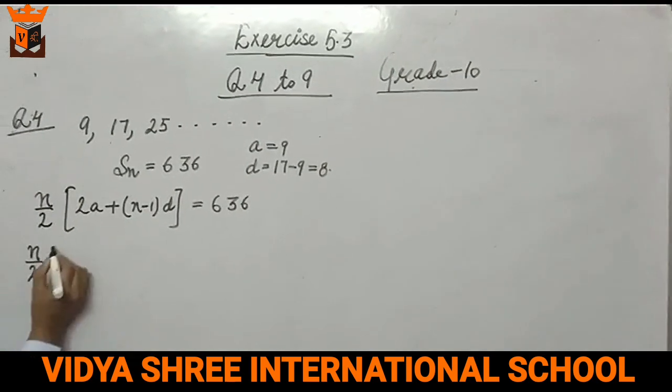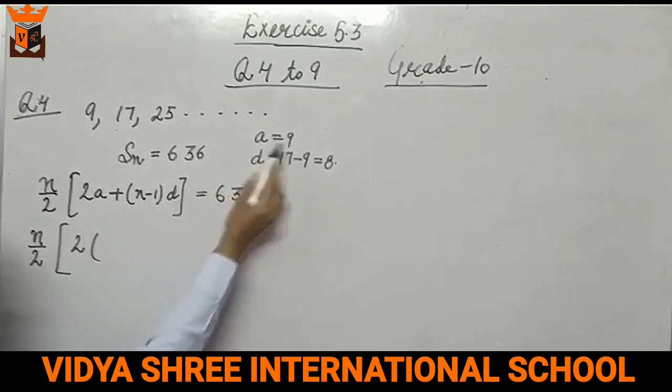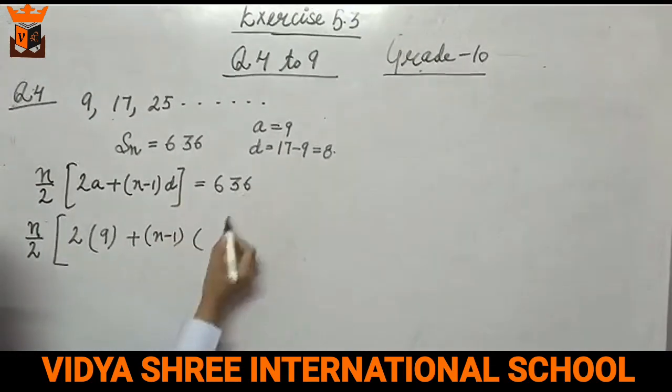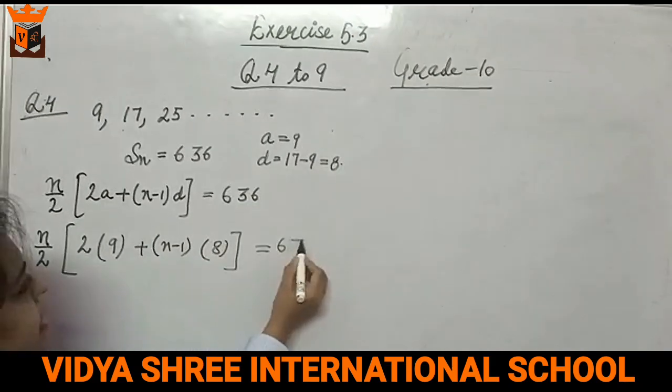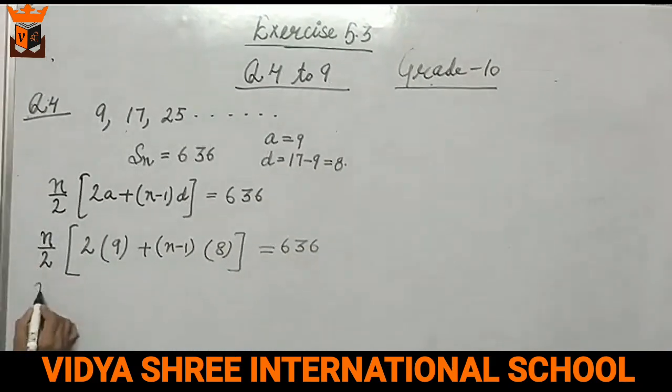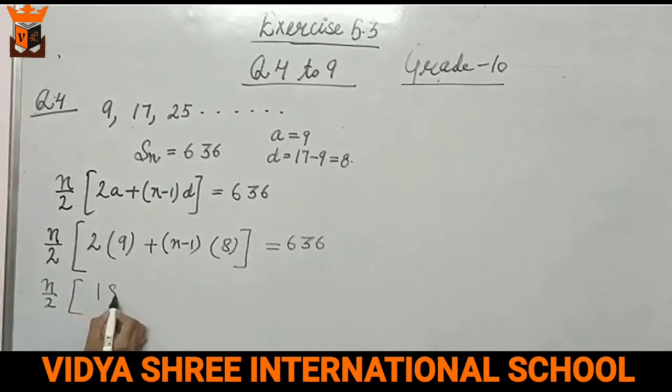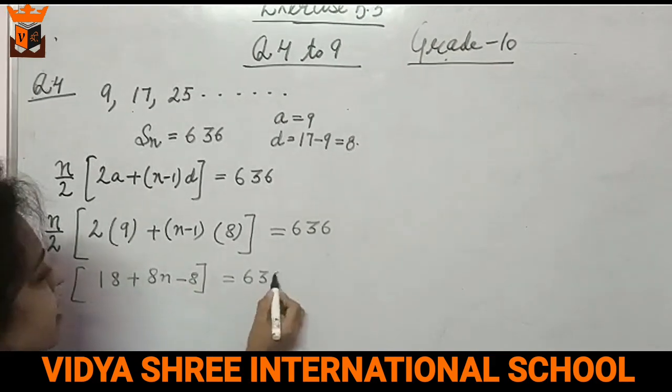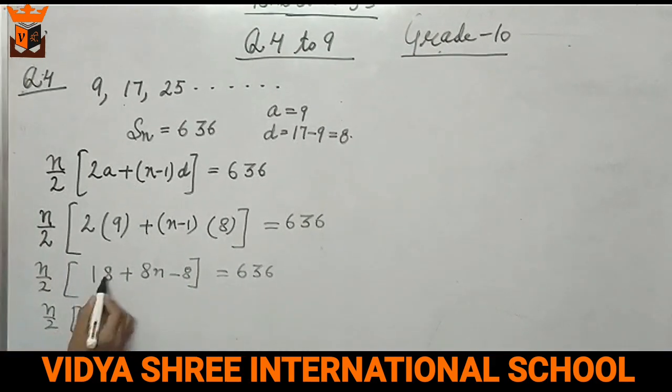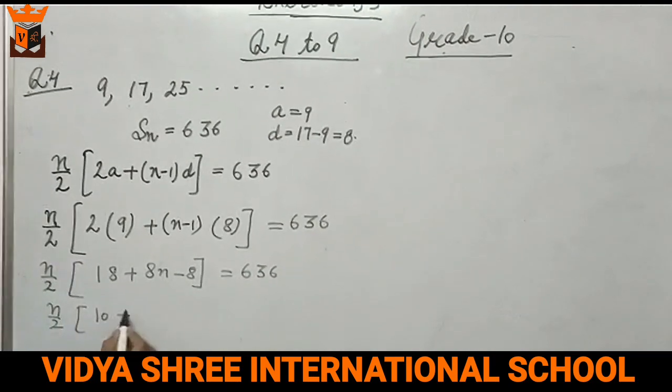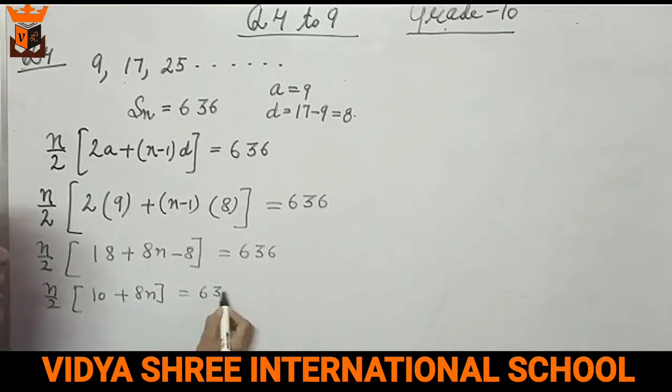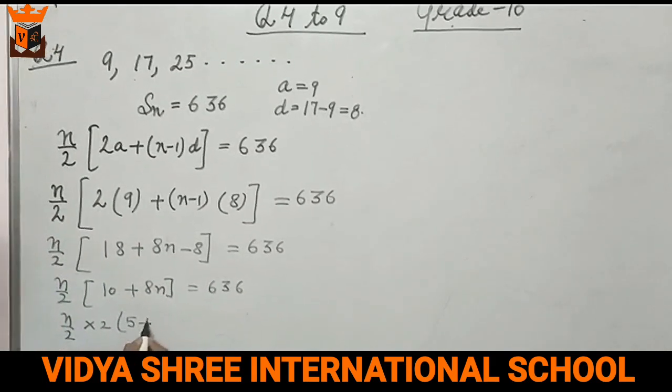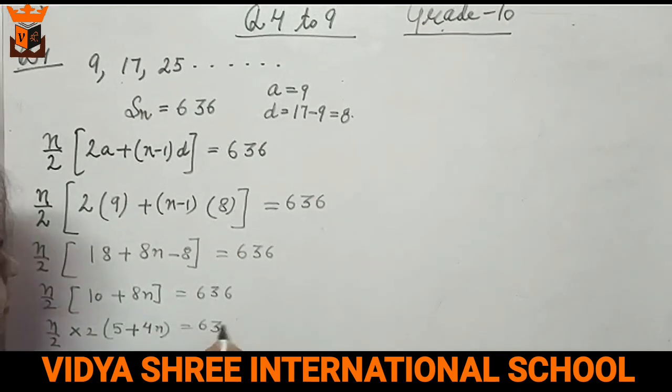So n by 2, what is a? a is 9. This is n minus 1, and what is d? d is 8. This equals 636. So n by 2, 9 times 2 is 18 plus 8n minus 8, this is 636. n by 2, taking 2 common, 2 times 5 is 10 and 2 times 4 is 8, equals 636.